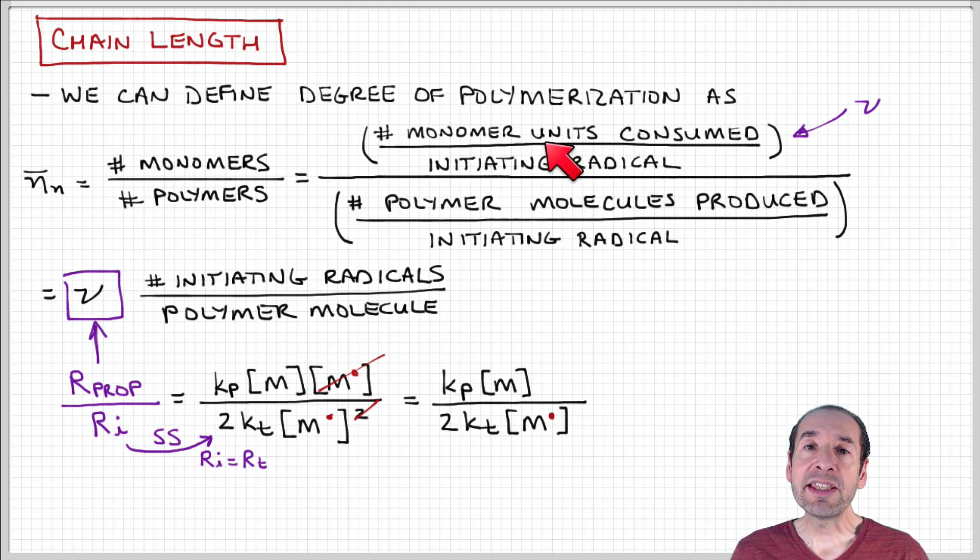I can rewrite this in terms of a ratio of the rate of propagation to the rate of initiation. The rate of propagation is the propagation rate constant times the monomer concentration times the concentration of active chains in the system. The initiation rate, I'm going to write in terms of the termination rate by using the steady state approximation, which says that the initiation and termination rates are the same. Growing chains are being produced at the same rate they're being converted to dead chains.